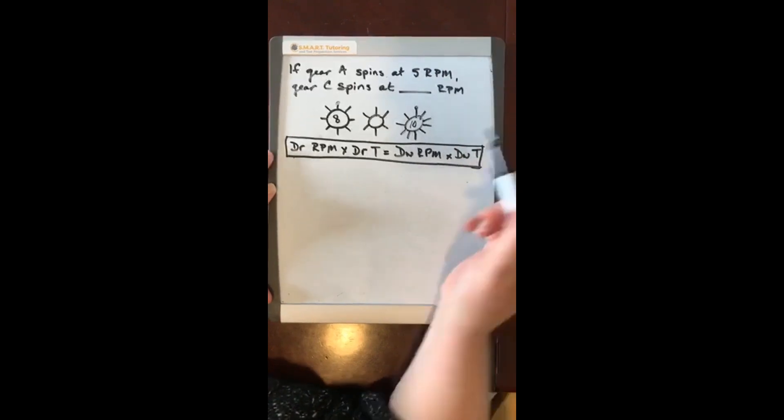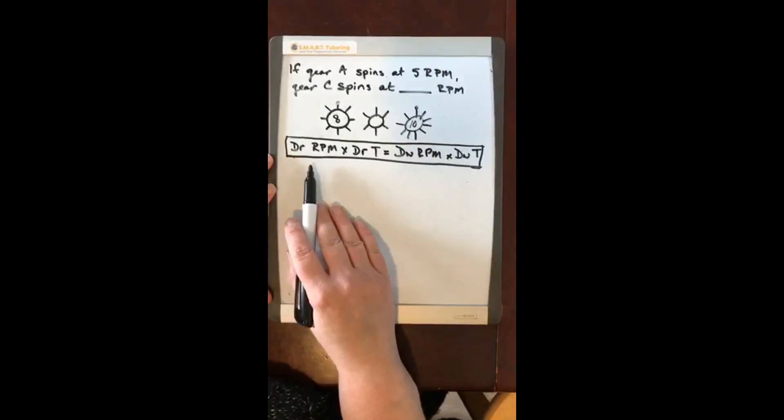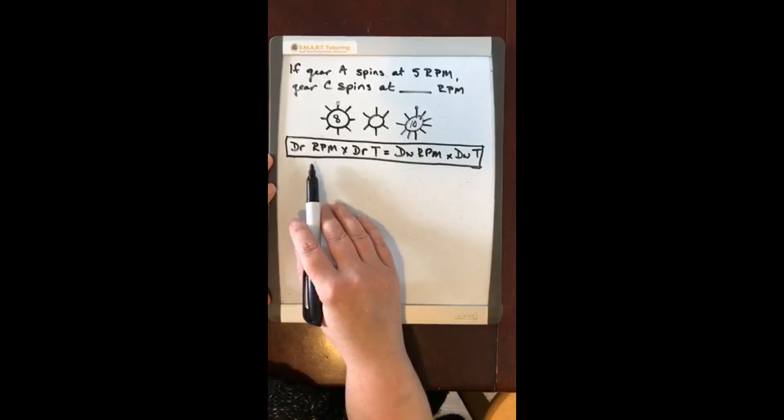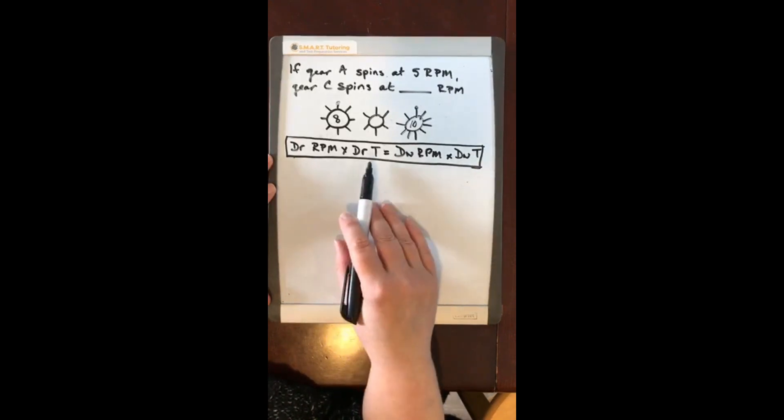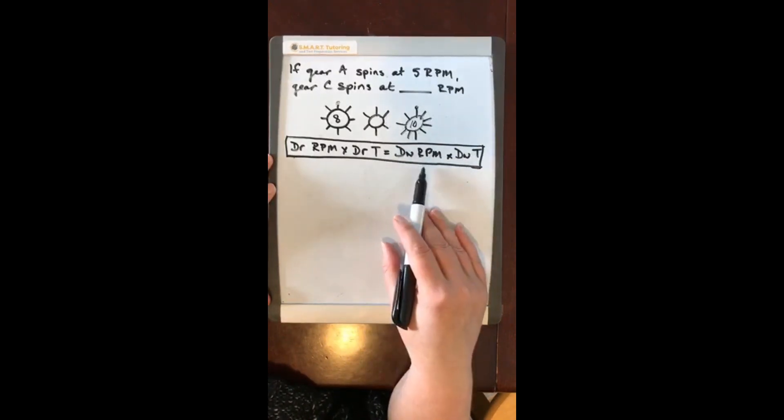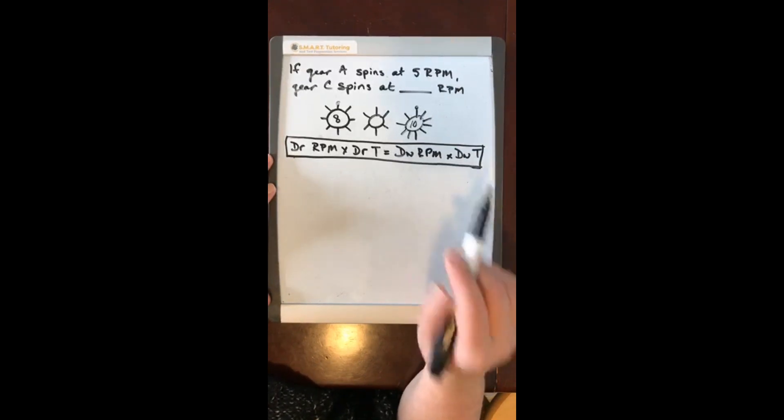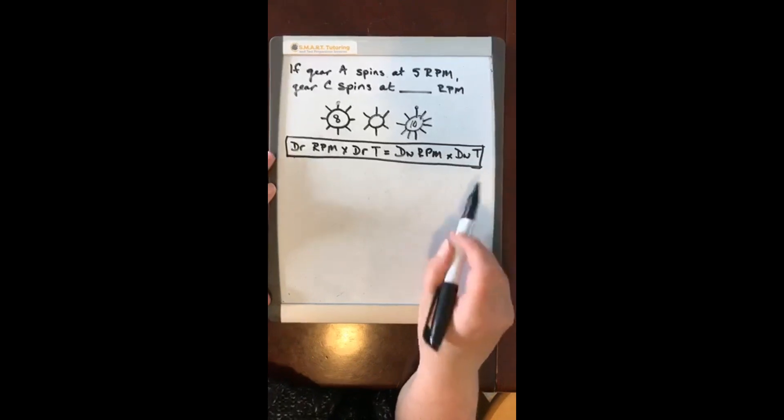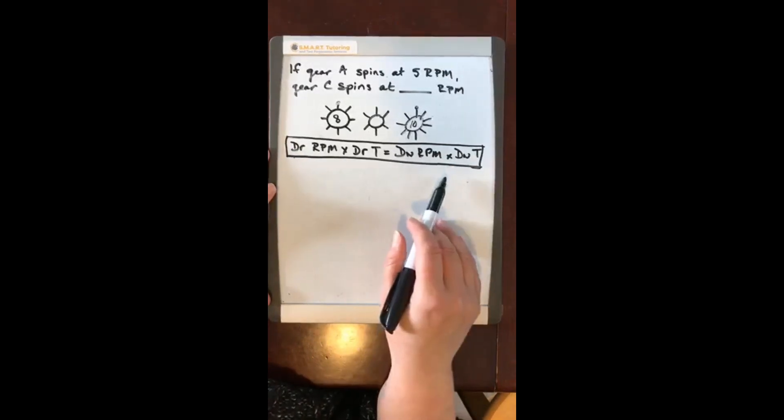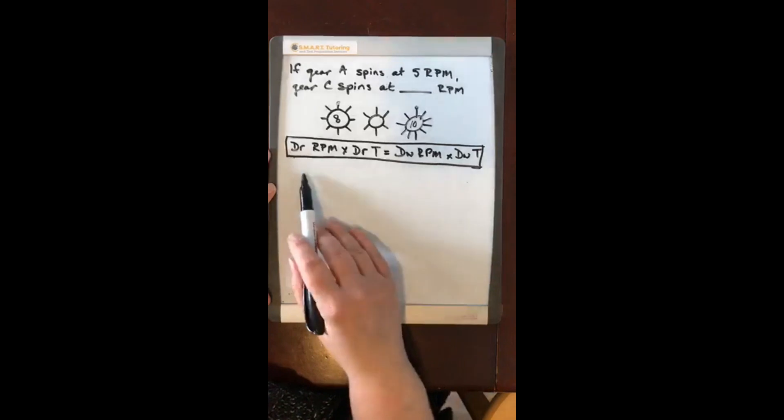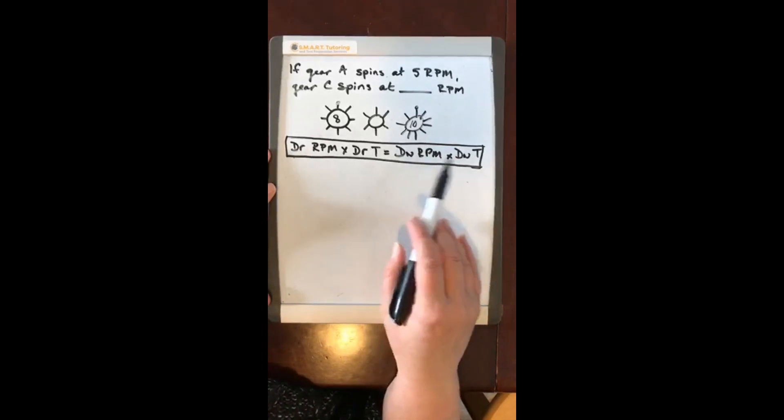What we're going to do is use this formula: driver rpm times driver teeth equals driven rpm times driven teeth. Now in your test prep books there are different formulas to use. I like to use this formula because it's easy to remember. Driver times driver equals driven times driven.